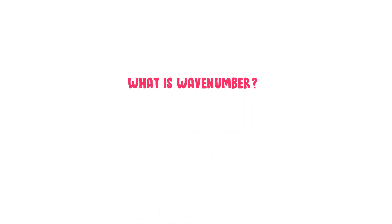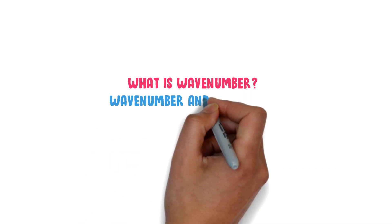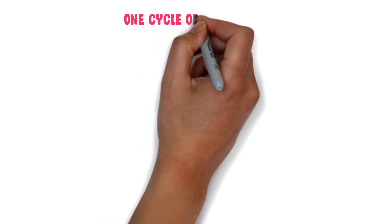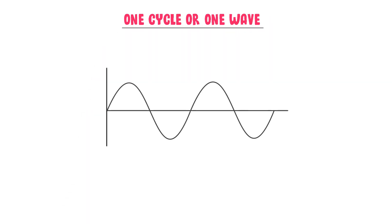What is wave number and what is the relationship of wave number and wavelength? Firstly, let me teach you about one cycle or one wave. Consider this wave motion and time.